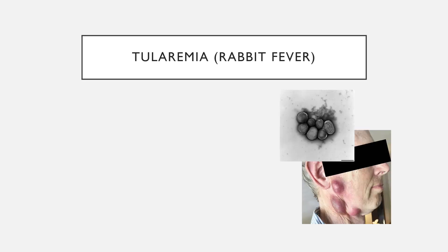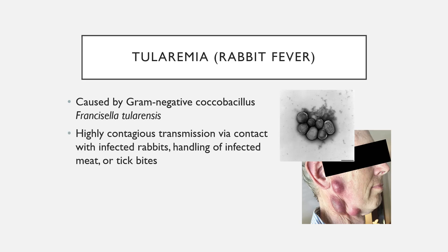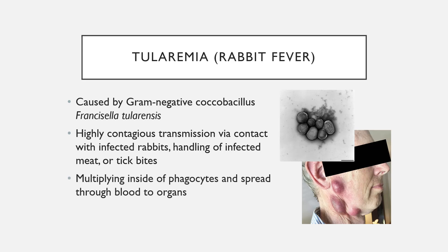Next we have tularemia, also colloquially known as rabbit fever — named after one of its reservoirs. It is caused by a gram-negative coccobacillus called Francisella tularensis. Tularemia is highly contagious through contact with infected rabbits or handling infected rabbit meat, and can also be transmitted through tick bites. Once inside the bloodstream, it multiplies inside phagocytes — evading their destruction — and hitches a ride through the bloodstream to other organs.